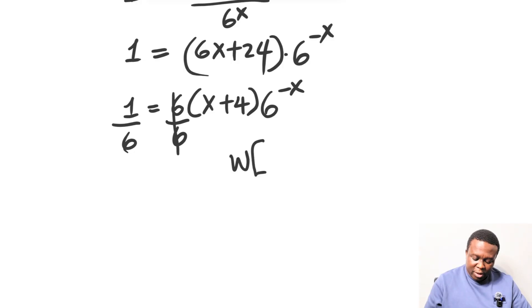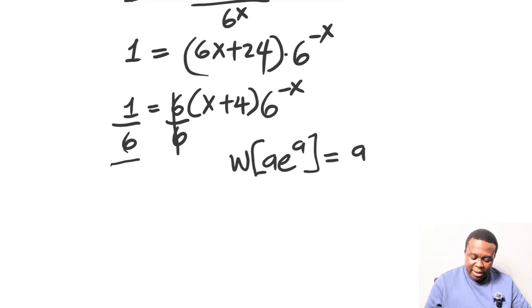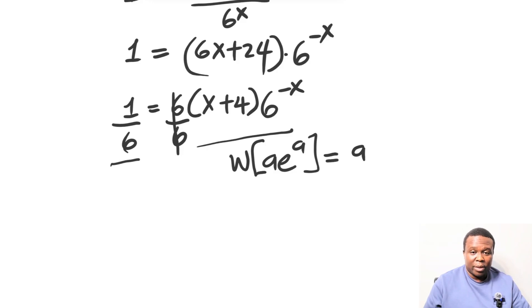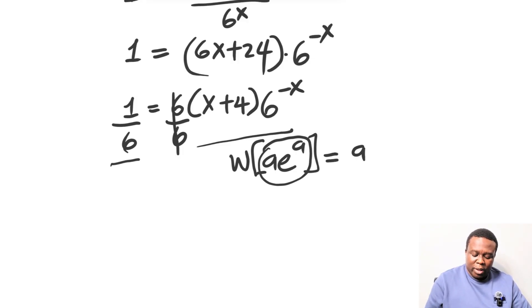Our Lambert W function states that a·e raised to the power of a is equal to a. So we're going to rewrite both sides of this equation to look like the Lambert W formula — that way we can find the value of x. Let's start by rewriting the right-hand side. We notice we have minus x at the power and a positive x at the base on the right-hand side, so let's try to make that base a negative x.